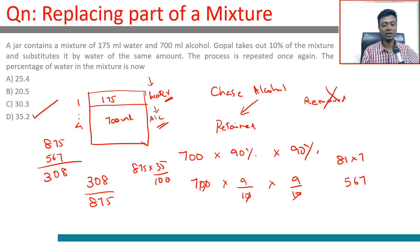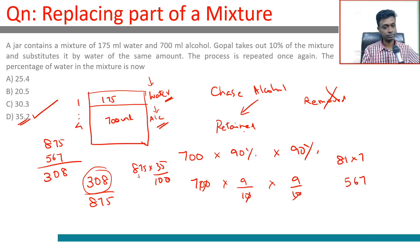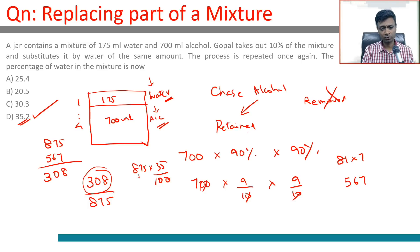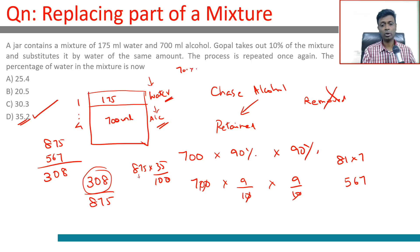Verification: 875 × 35/100 is a little more than one third of 875. One third of 875 is about 292, so this gives roughly 308 — that works out. The key point here: if you're removing and replacing only one component, chase the part for which you're doing only one action. Alcohol is only being removed; water is removed and added back — so forget water. For alcohol, think about what is retained — 90% each time. Experienced solvers just do 700 × 0.9 × 0.9 ÷ 875, and 100 minus that is the answer. You can do this in 45 seconds.